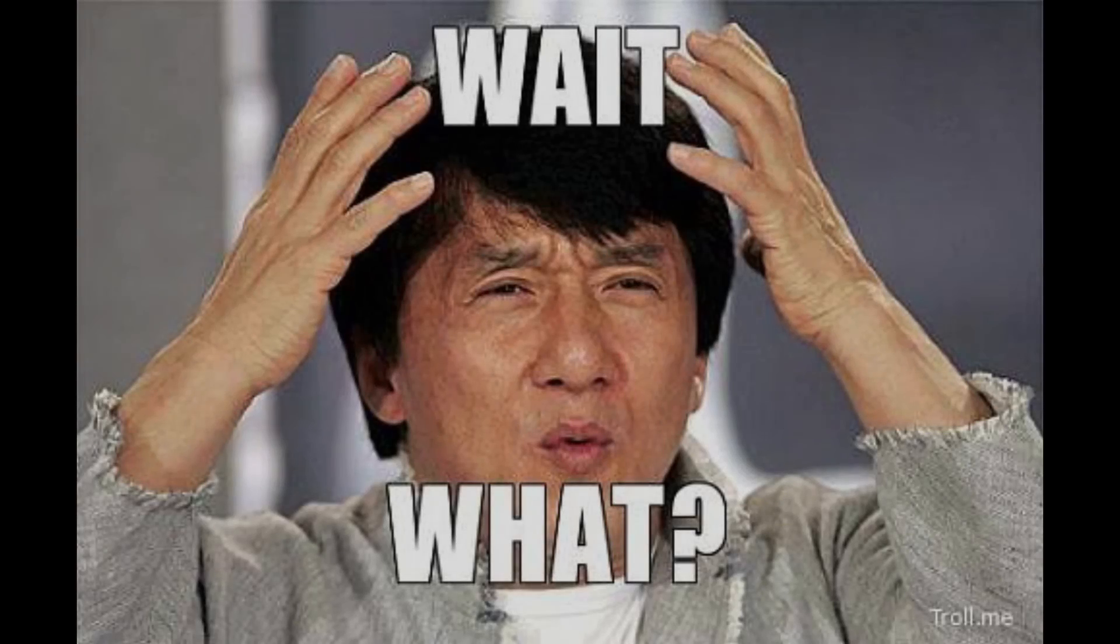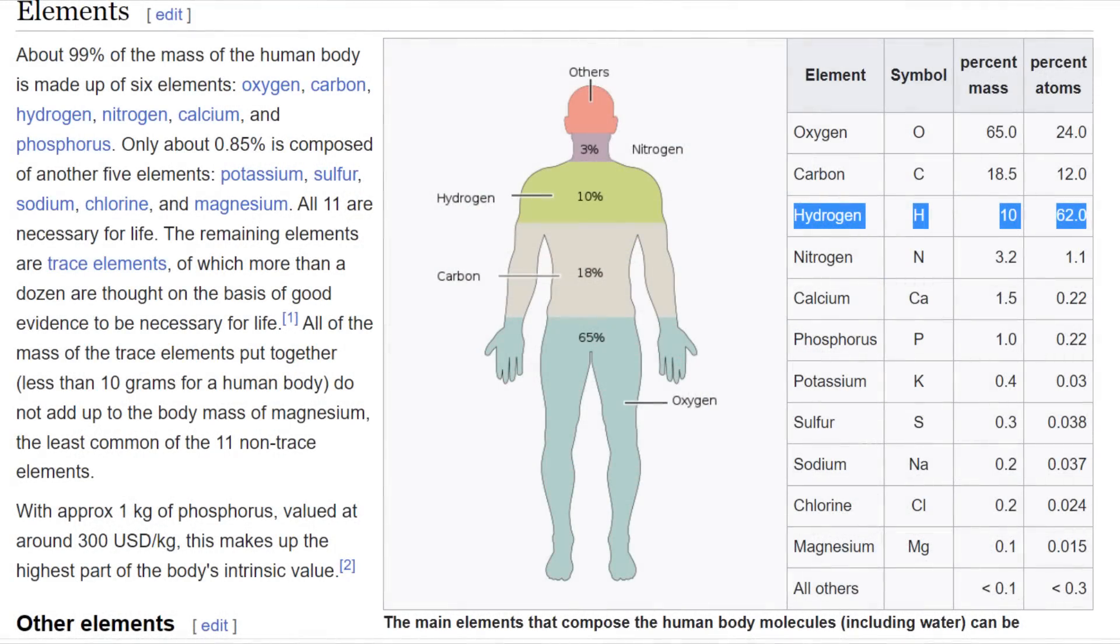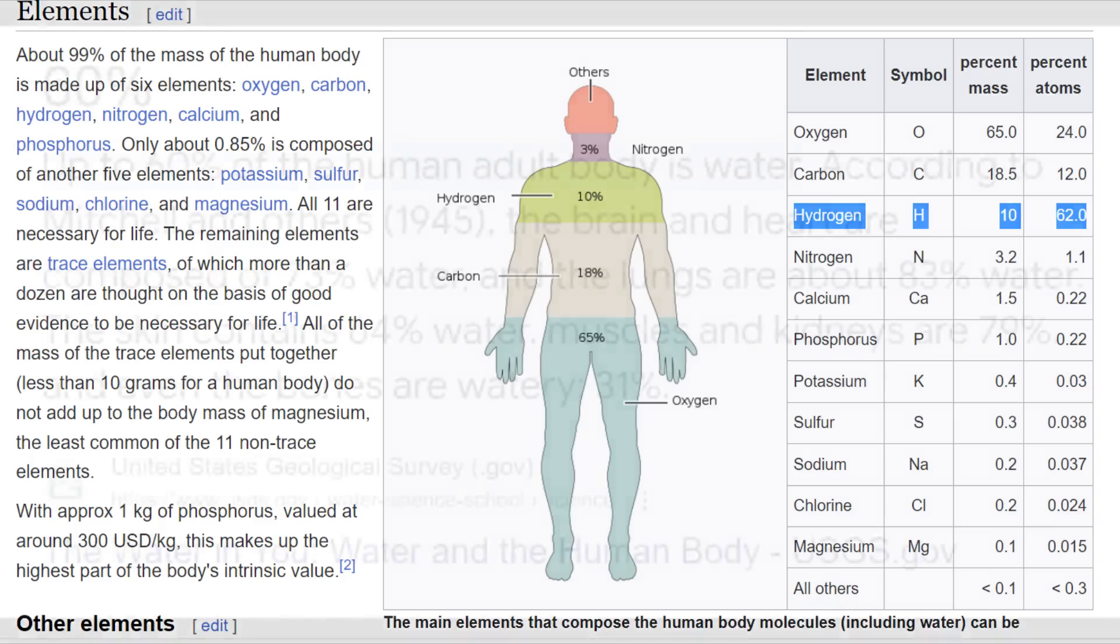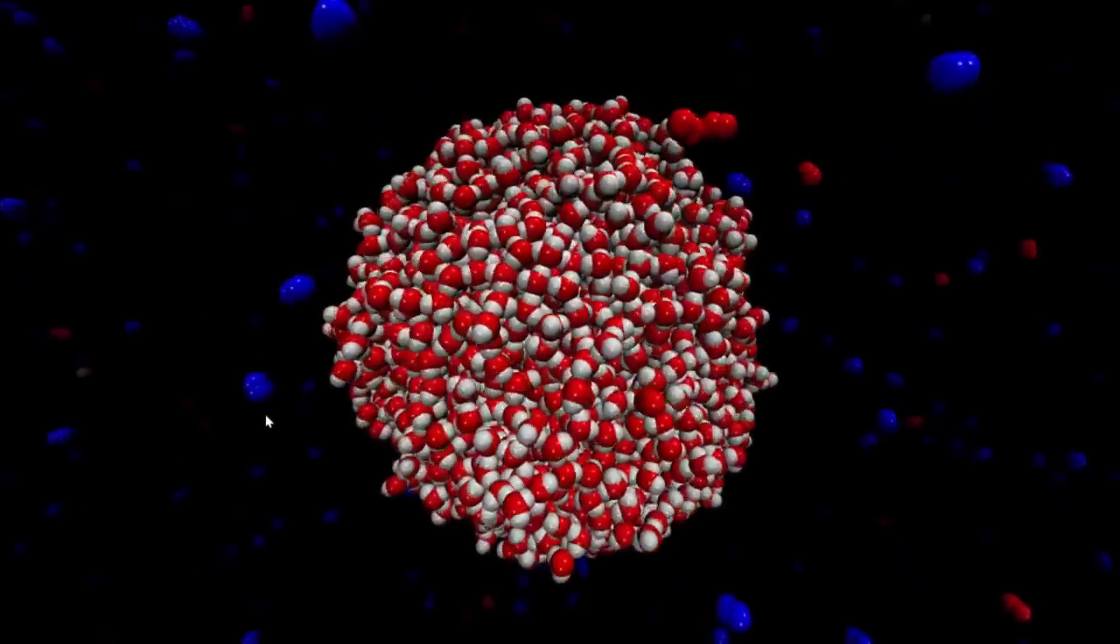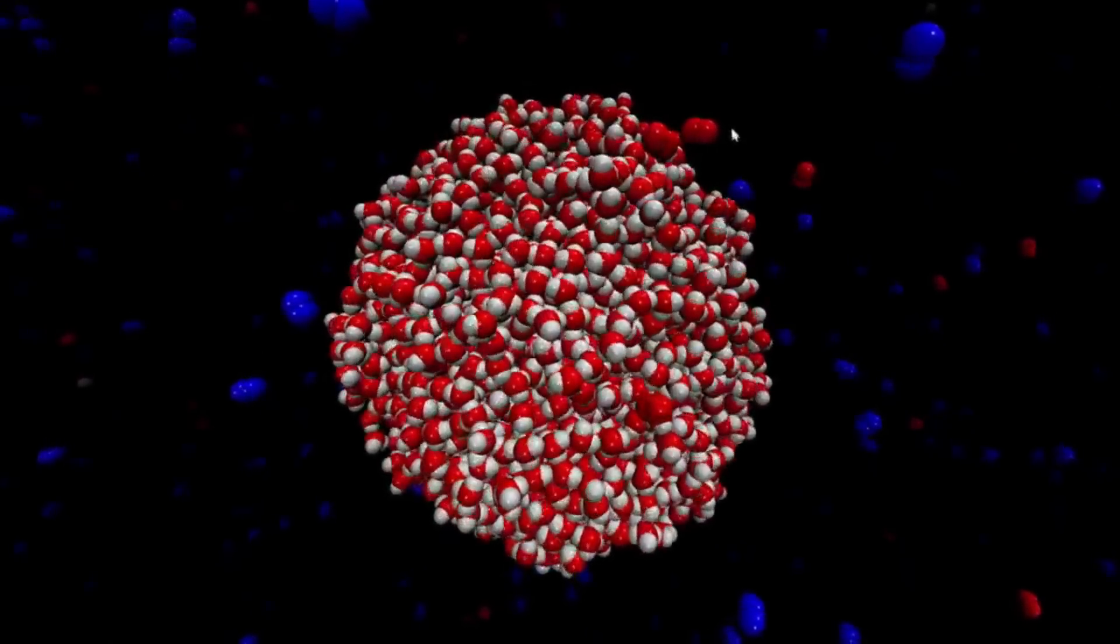Hydrogen, at least the non-radioactive versions, are the most common nuclei in your body, making up some 60-odd percent of the atoms in your body. Over half the atoms in your body are hydrogen. Not terribly surprising if you think about it. Most of your body is water, and two-thirds of the atoms in water are hydrogen atoms.